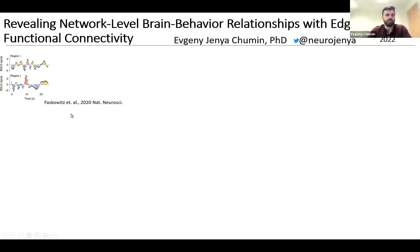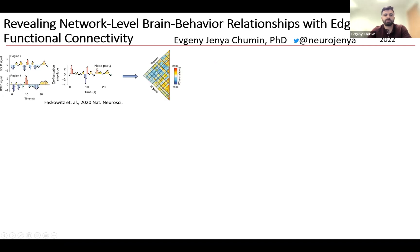A quick background on functional connectivity: it is the correlation between two regional blood oxygen-level dependent signals, and it's computed as the element-wise product of the Z-score that is then averaged to make up a single element in this functional connectivity matrix.